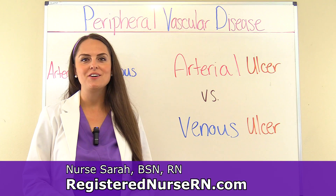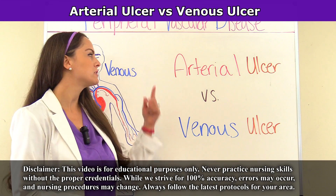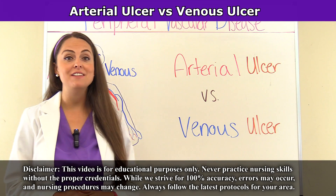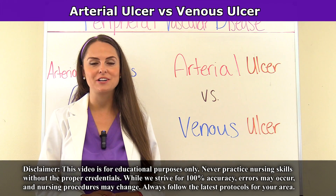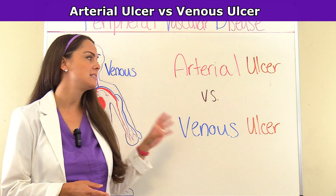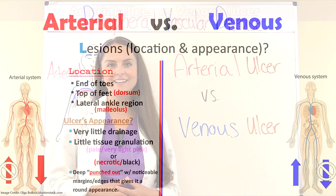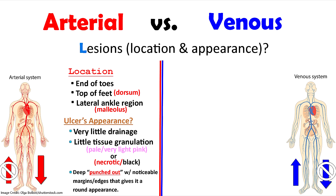Hey everyone, it's Sarah with RegisterNurseRN.com and in this video we're going to compare an arterial ulcer versus a venous ulcer. I'm going to hit on those main concepts you need to know for exams about these types of ulcers. When you're studying arterial and venous ulcers, you want to be able to identify where these ulcers tend to be located and how they appear, because that's what exams love to ask you about.